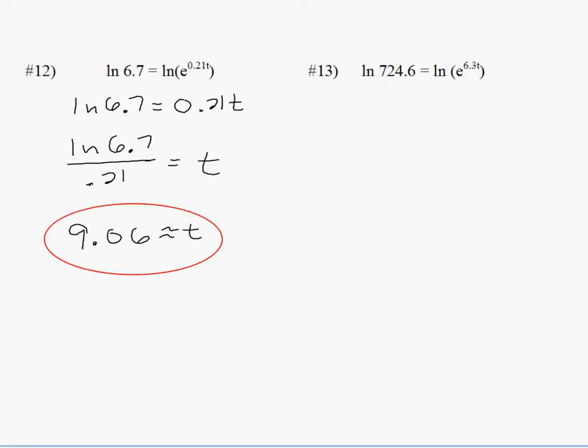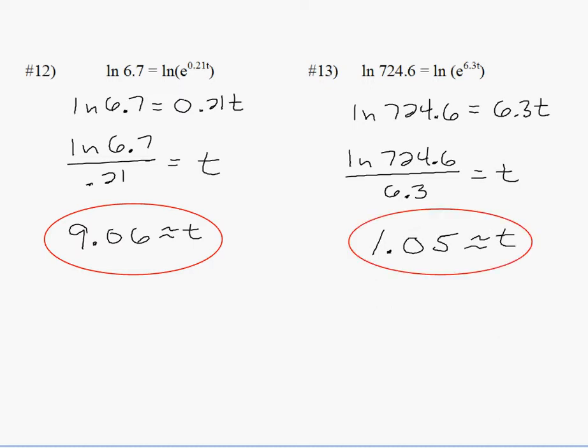Number 13, the right side once again simplifies just to the exponent. And the reason is natural log has a base of e. The argument has a base of e. So it just becomes the exponent. Divide both sides by 6.3. Put it in your calculator. You get 1.05 for t.